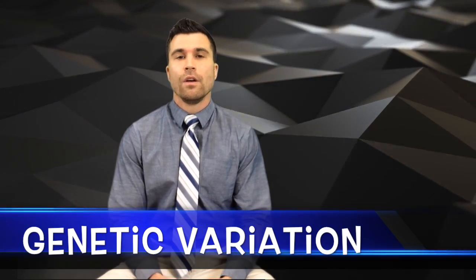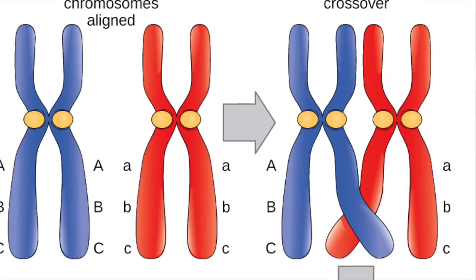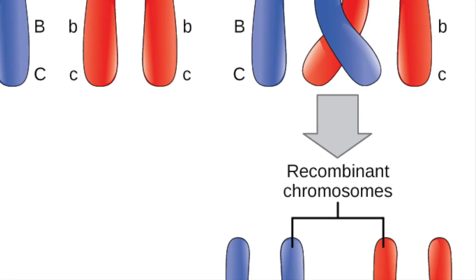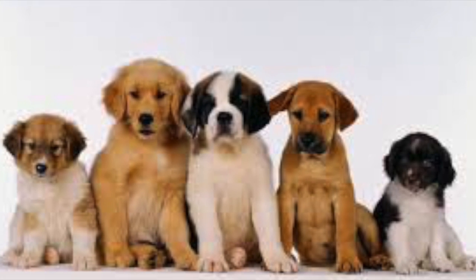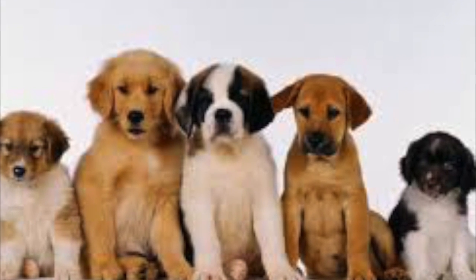Organisms that produce offspring via sexual reproduction also lend a lot of genetic variation to DNA sequences. When gametes, or sex cells, are formed, a process known as crossover causes the DNA sequences of each sex cell to be different from that of the parent. On top of that, each parent — male and female — lends half of the genetic material to the offspring, producing things that are similar to mom and dad but still different all on their own.